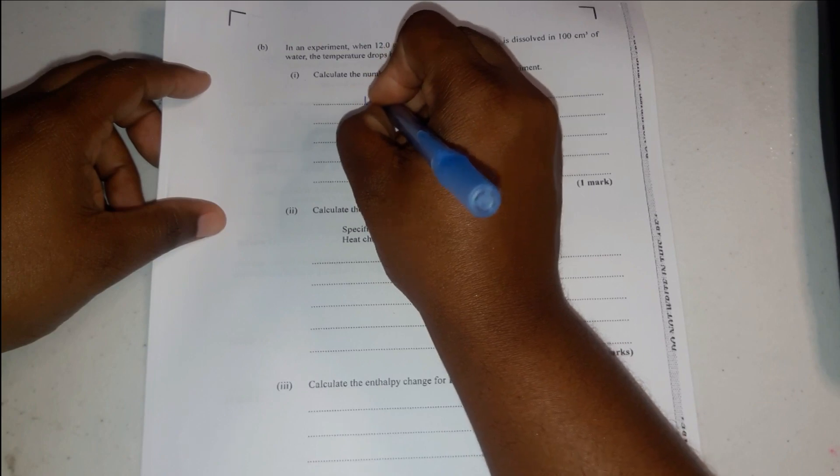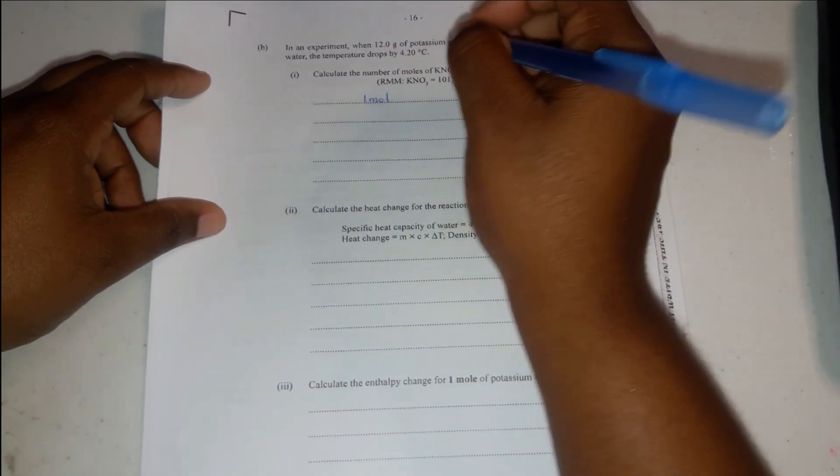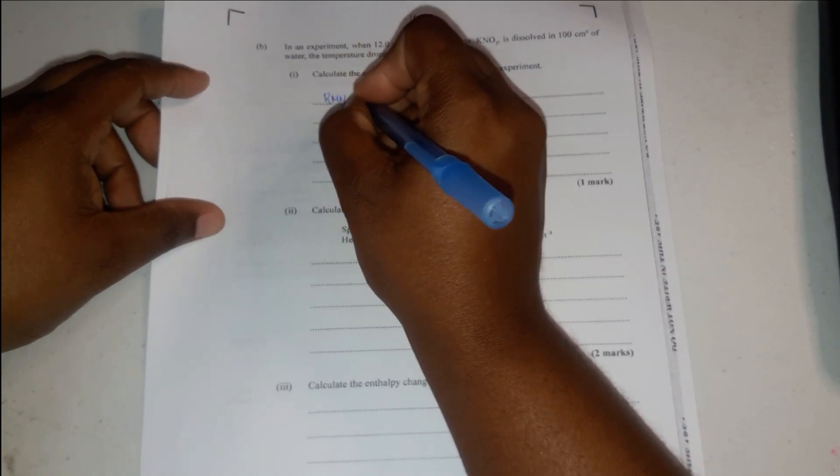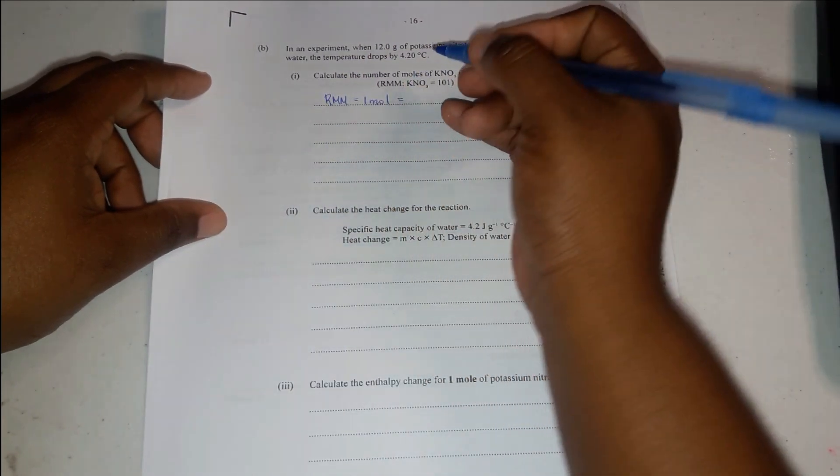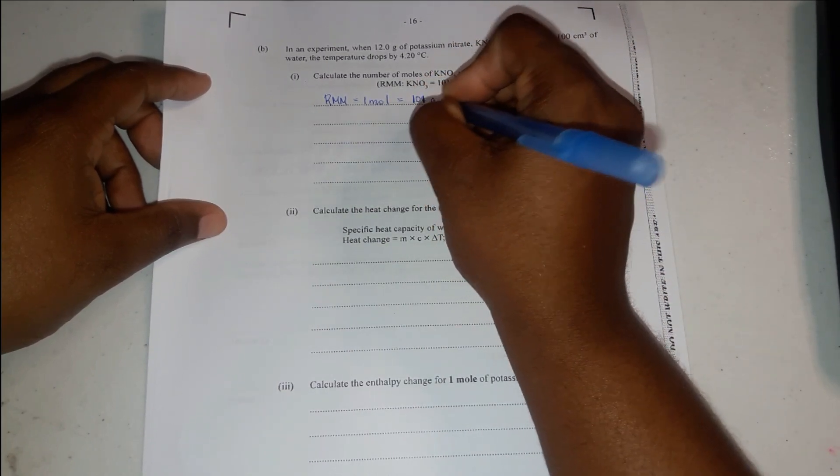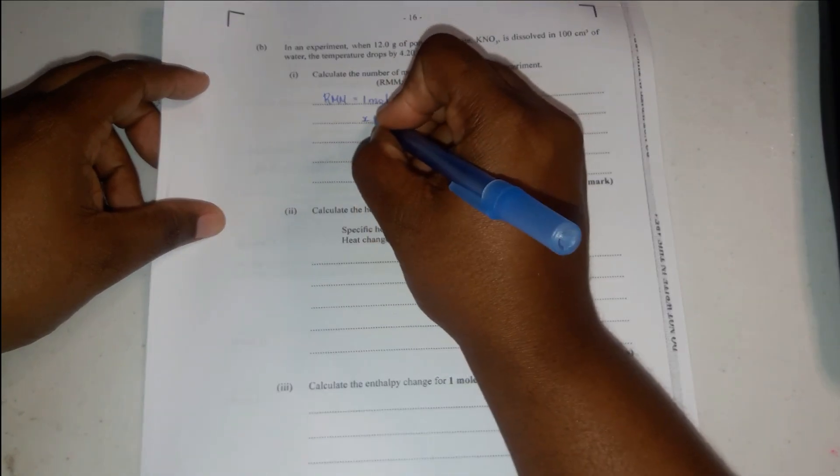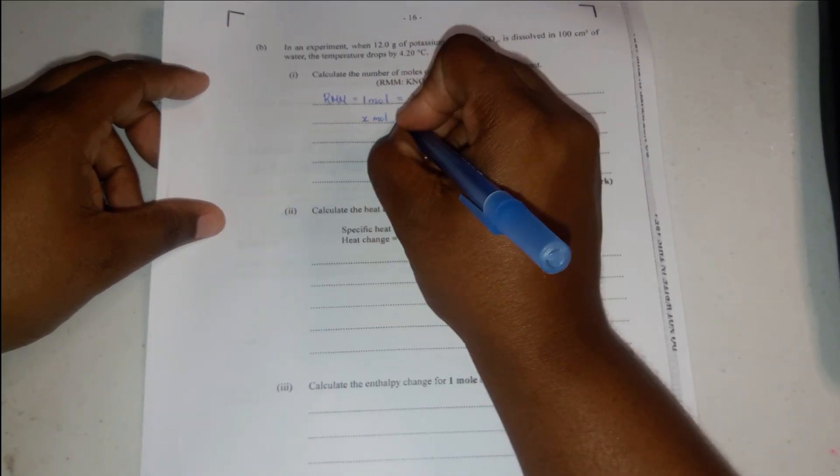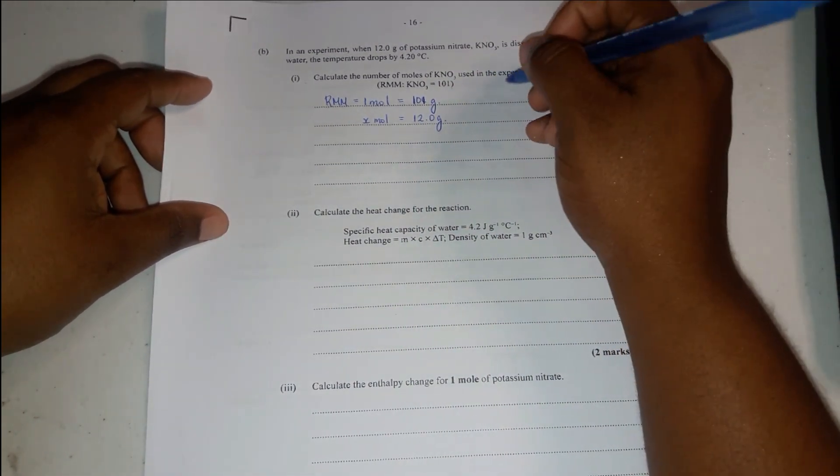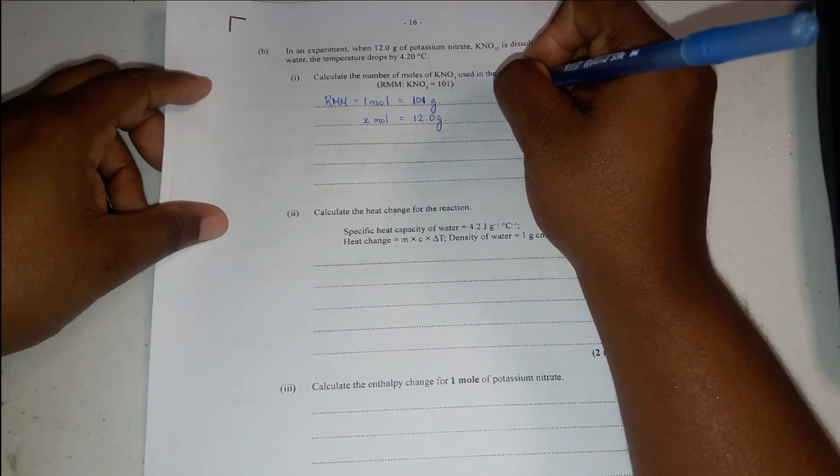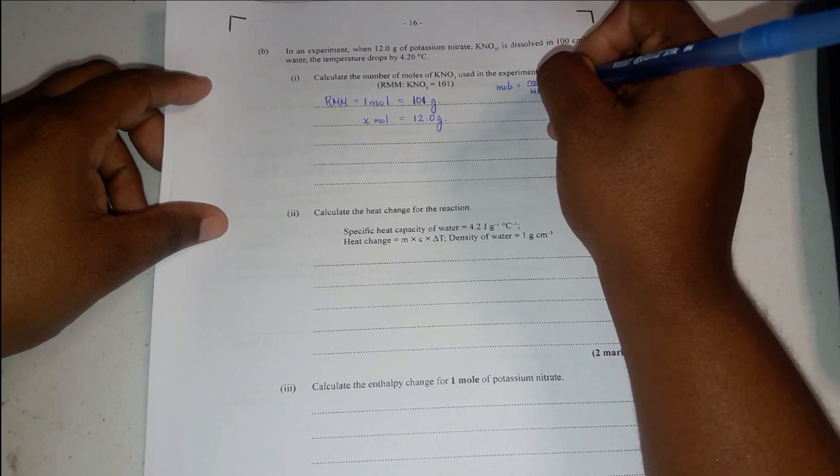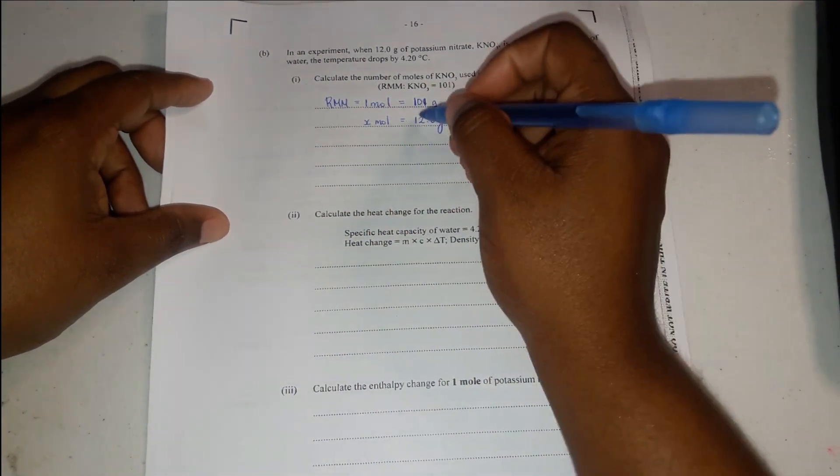So we say 1 mole, the relative molecular mass is equal to 1 mole. So if RMM is equal to 1 mole, then 1 mole must have a mass of 101 grams. If you want to find how many moles are in 12 grams of potassium nitrate, you can use this formula of moles equal to mass over molecular mass. Both methods will give you the same answer.